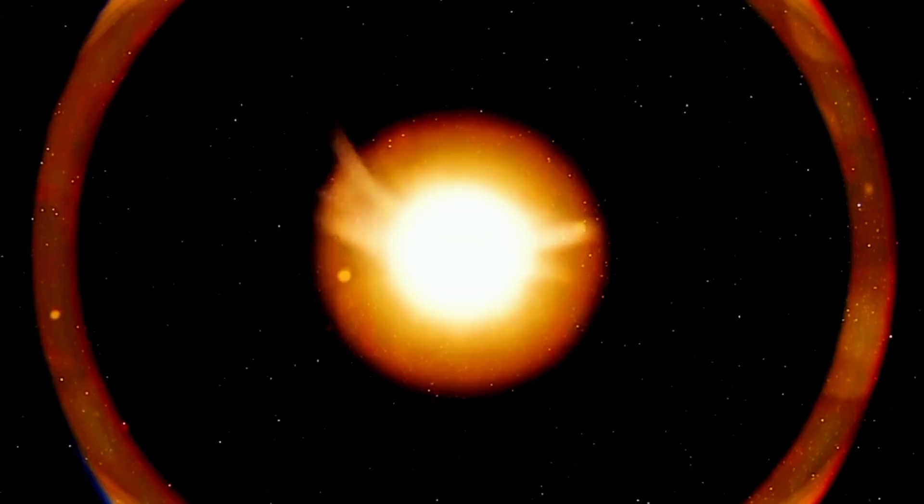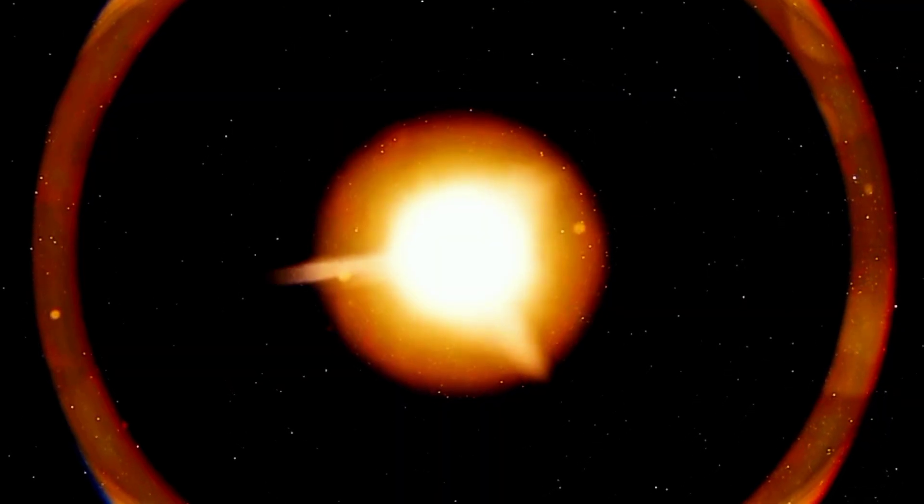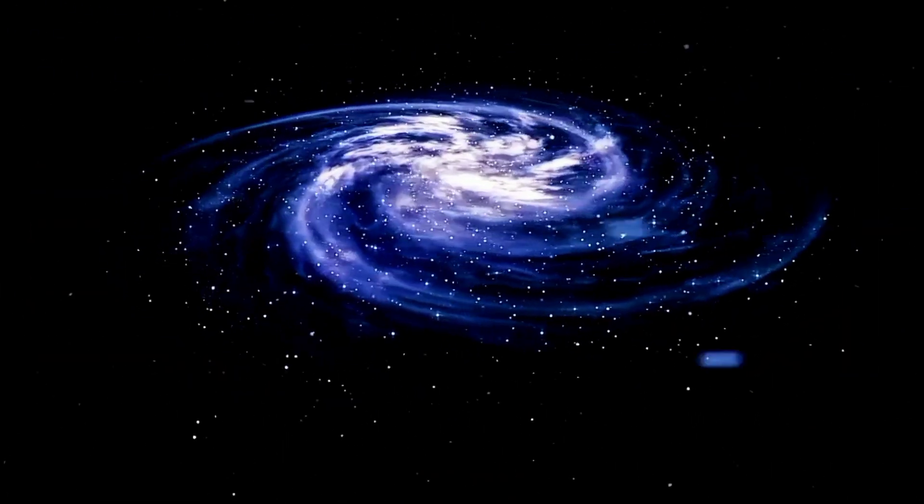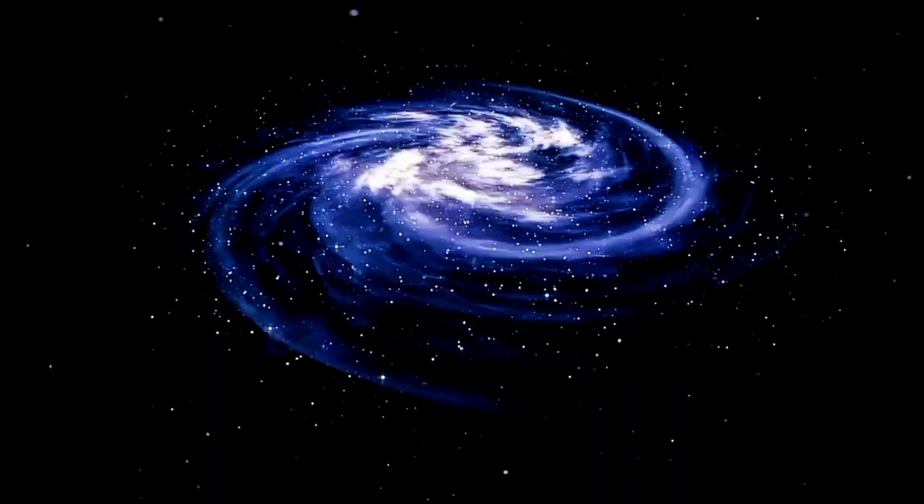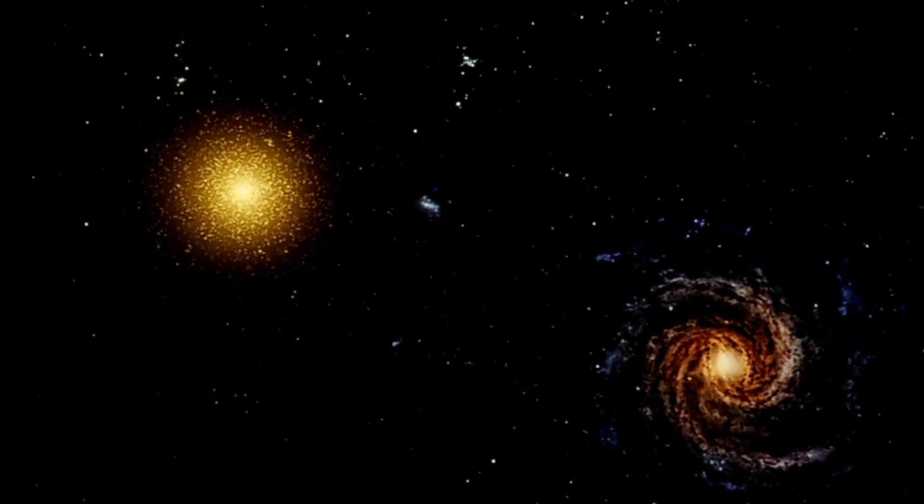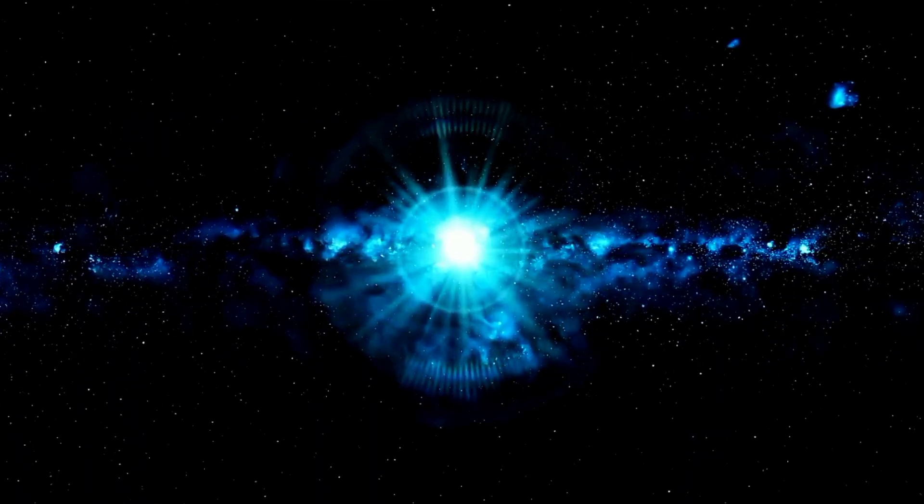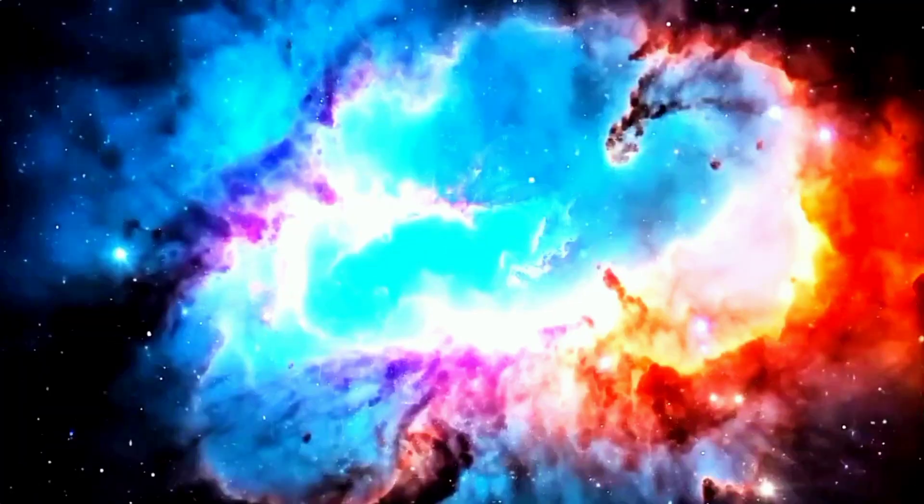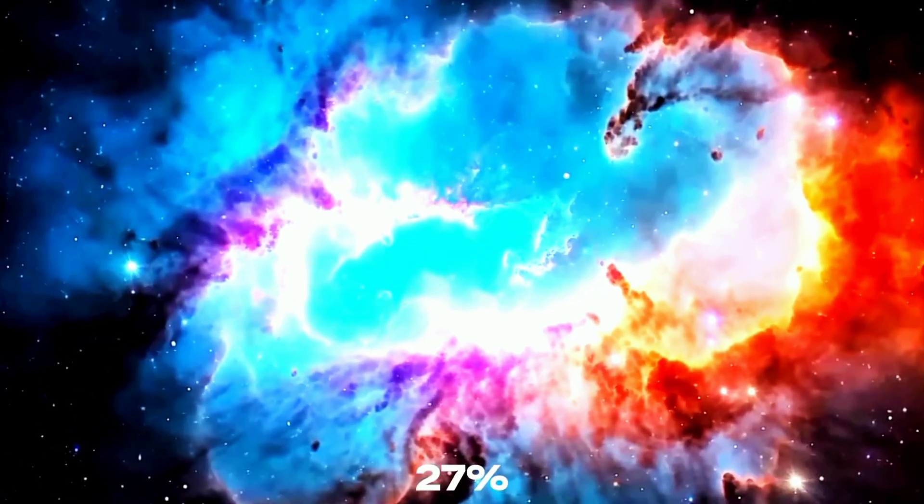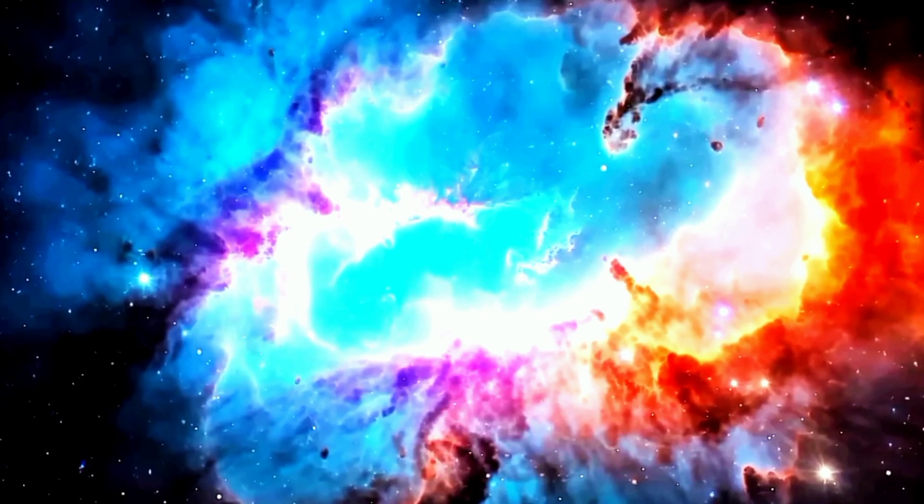Now let's talk about dark matter. When scientists observed the speed of galaxies, they found that they were rotating so fast, they should have broken apart. But they didn't. That's when scientists concluded that there must be some invisible mass holding them together. And they named it dark matter. This makes up around 27% of the universe.